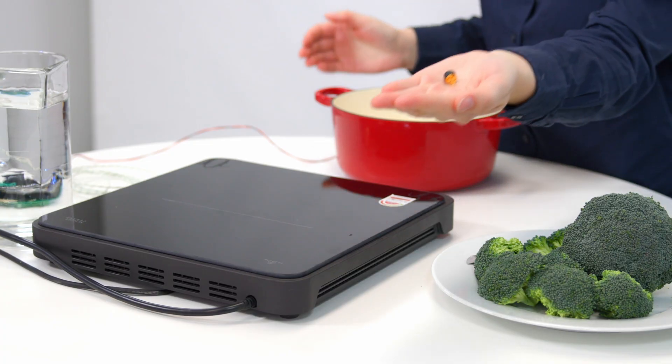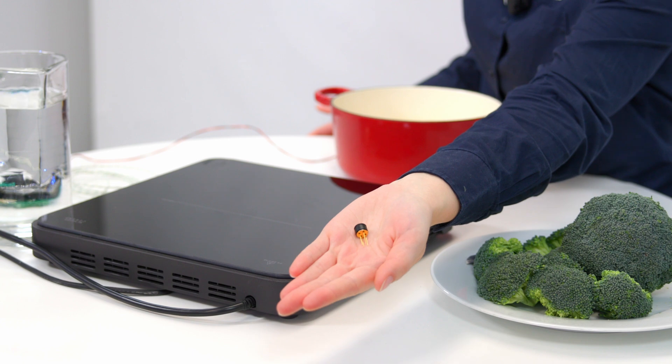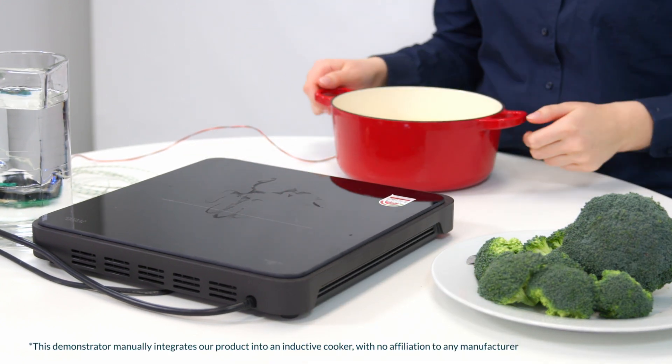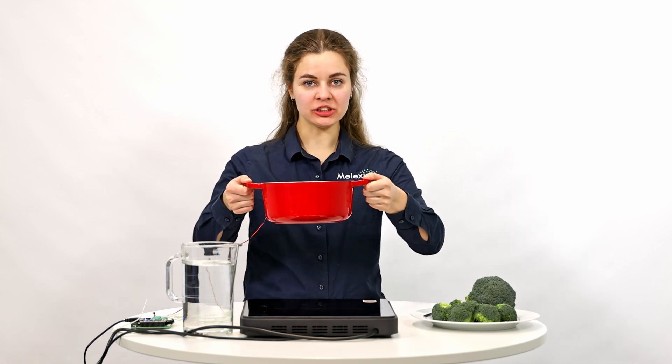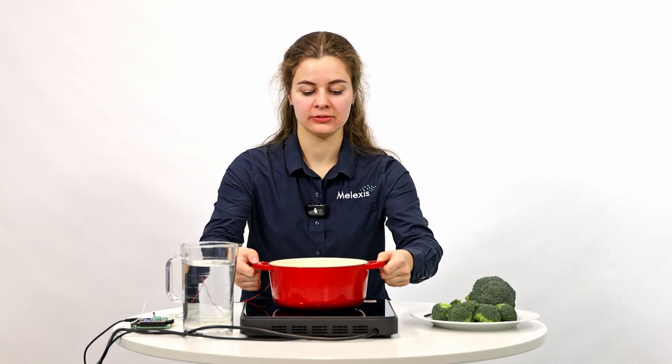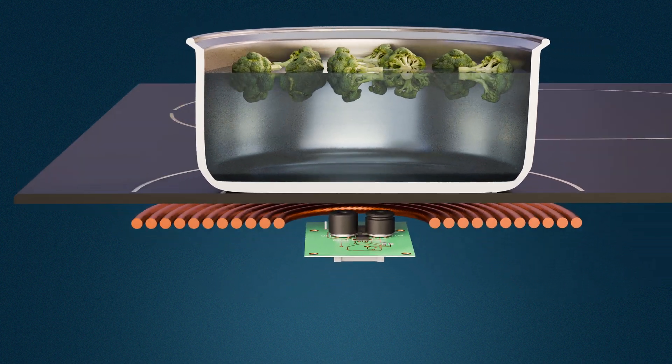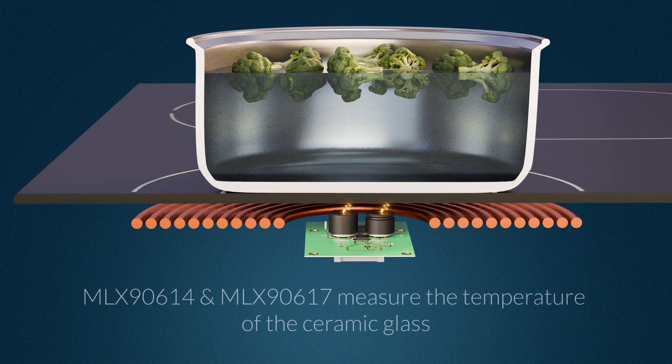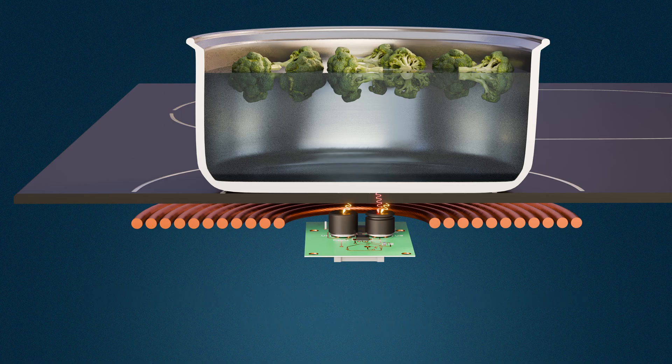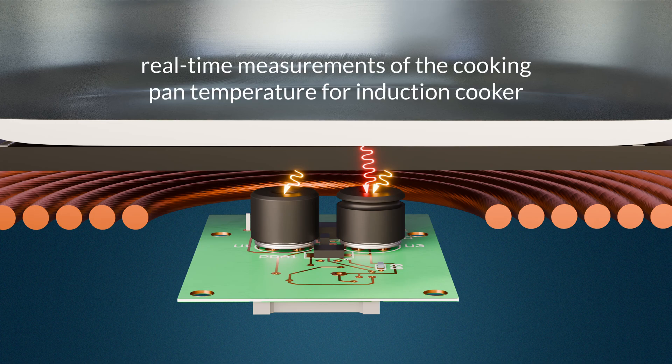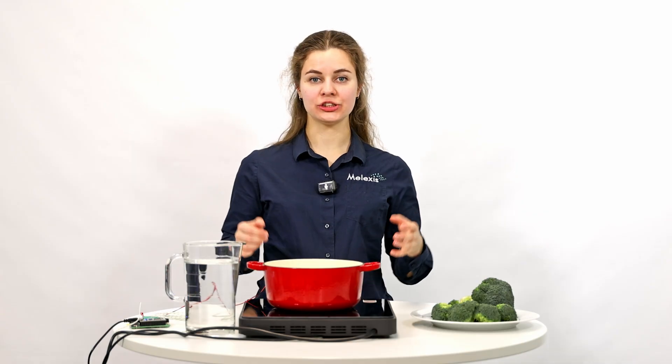I have it with me, it's called a Melexis 90617. It is located inside this induction cooker underneath the ceramic glass and can measure the temperature of the pot through the glass. To showcase its performance, I will boil some broccoli.